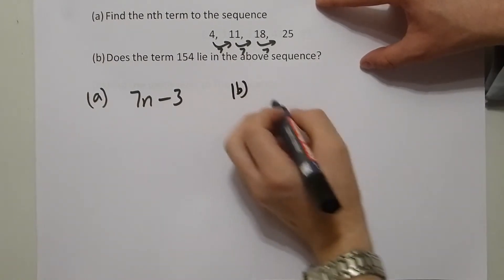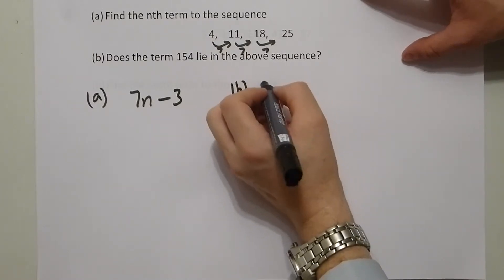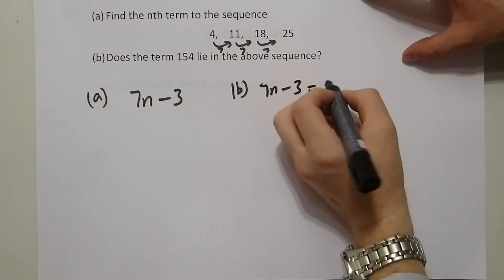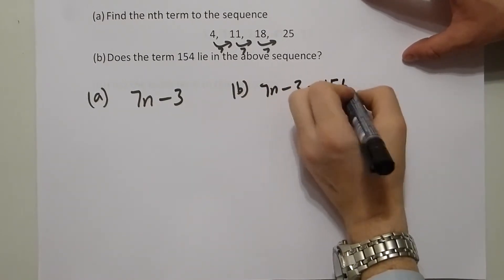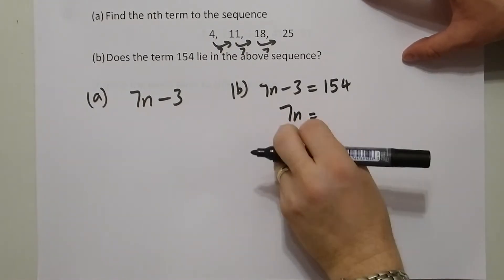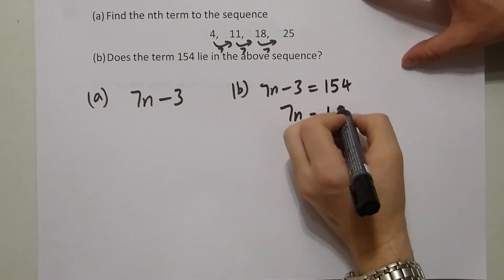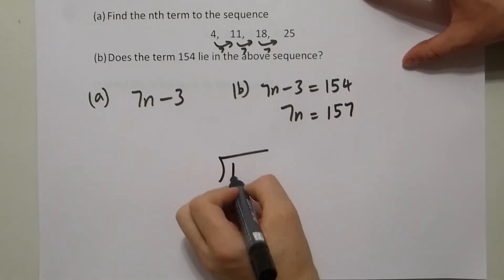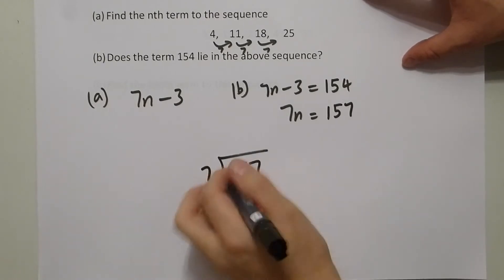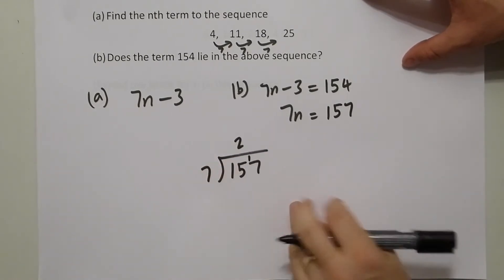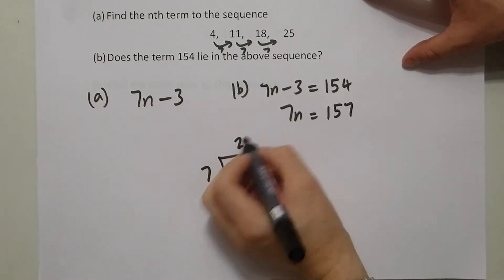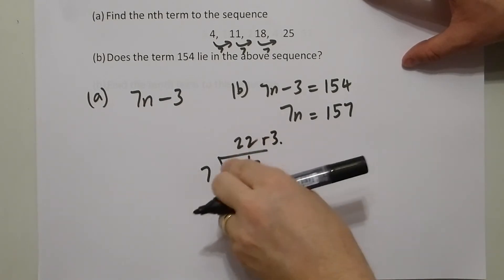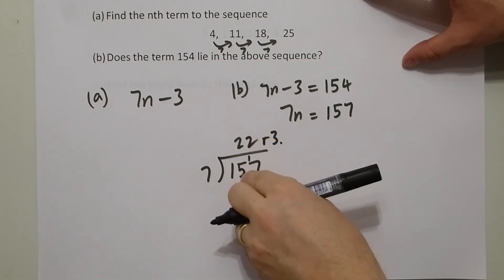In part b we are asked to determine whether 154 lies in this sequence. So we check to see whether it belongs — in other words, is 7n equal to 157 when I add 3 on. Now clearly 7 goes into 15 twice with 1 left over, and 7 goes into 17 twice but that's a remainder of 3, so it doesn't go exactly into 157.